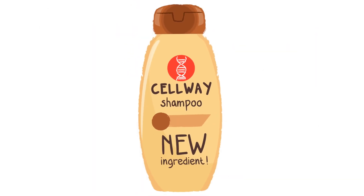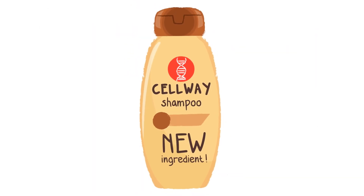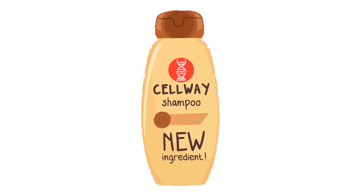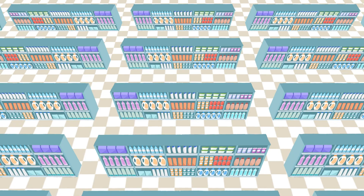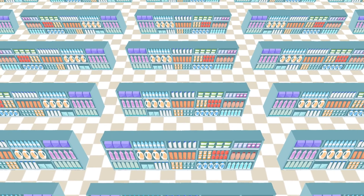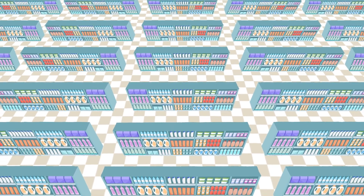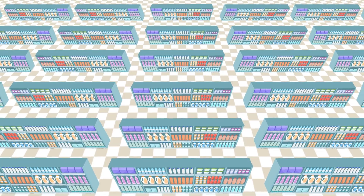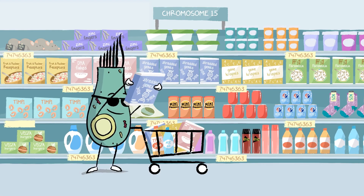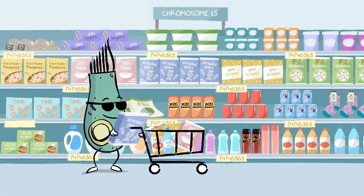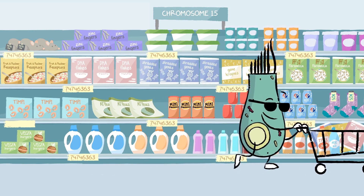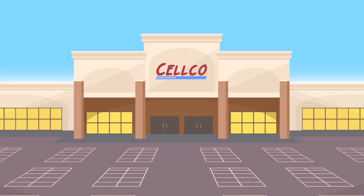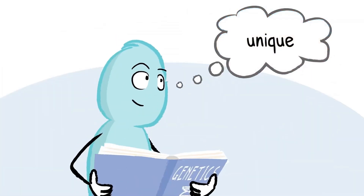DNA sequencing can be used to look at one product, or it can be used to look at hundreds or even thousands of products in someone's supermarket at the same time. This makes it a powerful tool in helping to understand how the combination of products that we carry in our supermarkets makes us all unique.